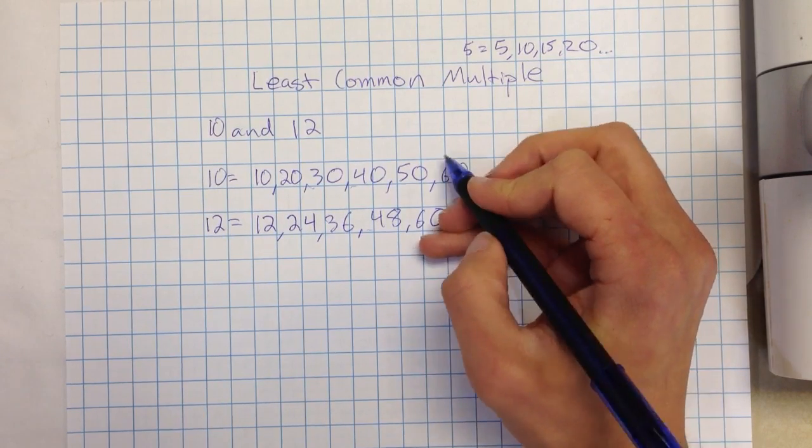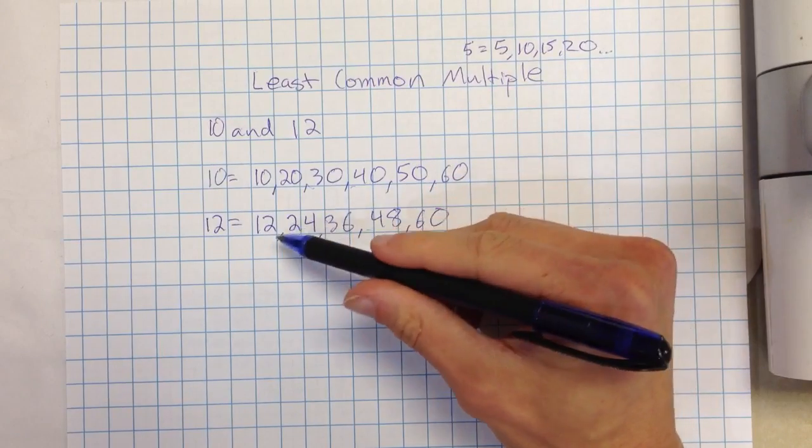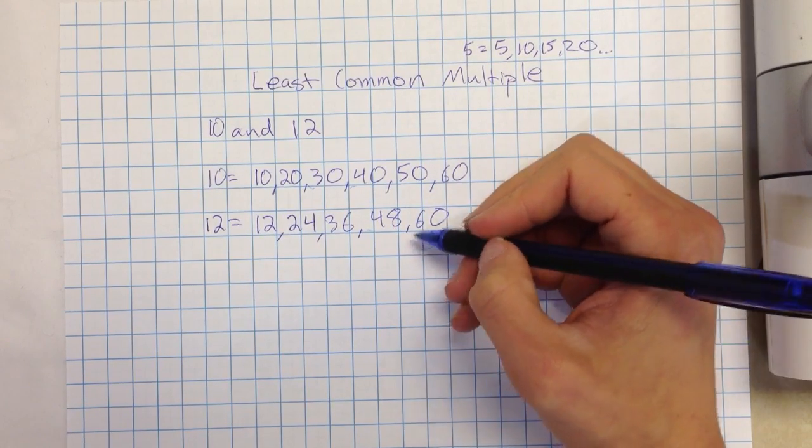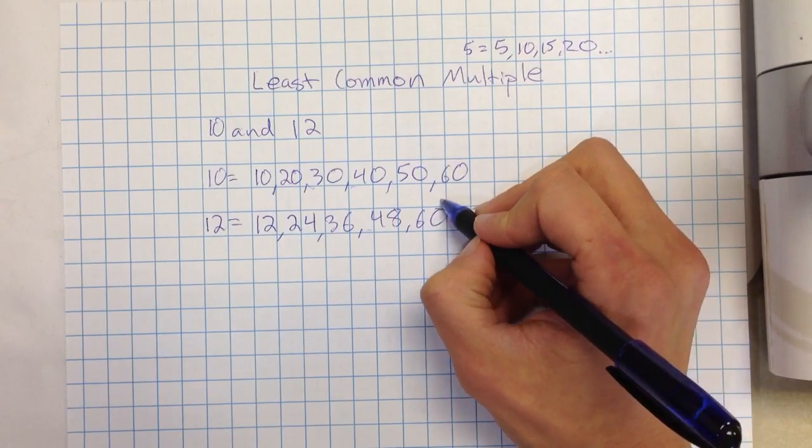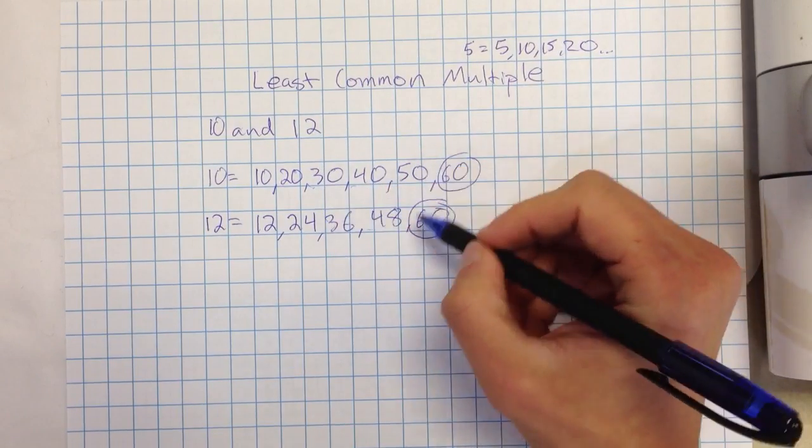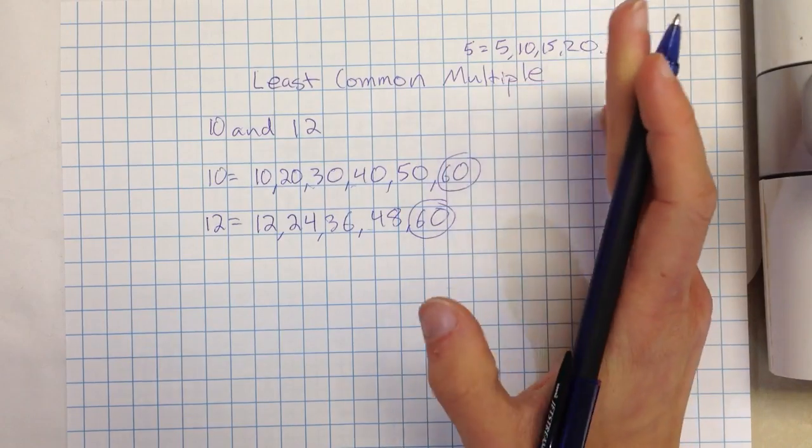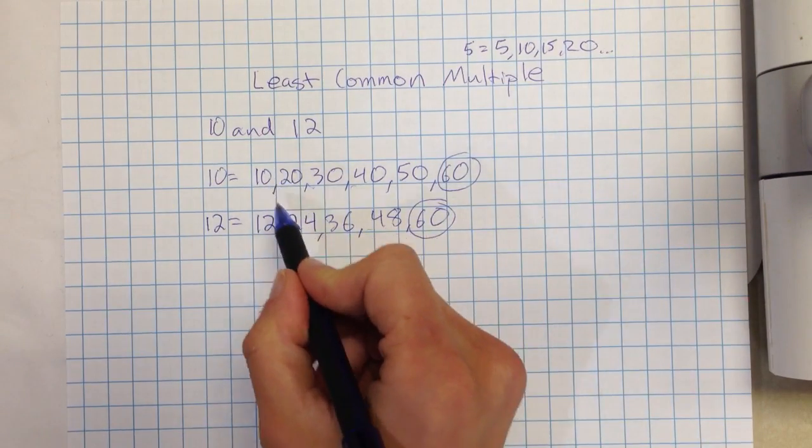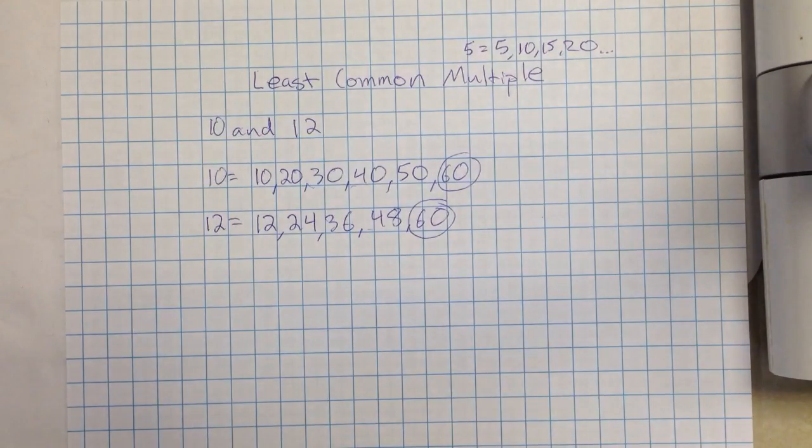I generally recommend try to write out maybe like the first five and then start working on the next numbers for five and see if you find something by then. If not, you would just have to keep going. But this is the first number that is a multiple of both ten and twelve that they have in common.